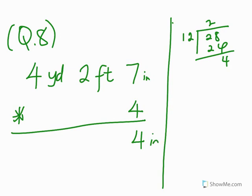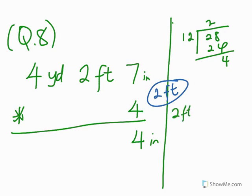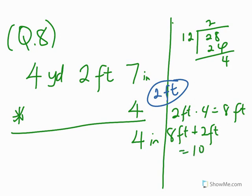We got 2 feet. Then you do 2 feet times 4 is 8 feet. Then 8 feet plus 2 feet — you've got to add this, don't forget. 2 feet times 4 is 8 feet, then 8 feet plus 2 feet is 10 feet.